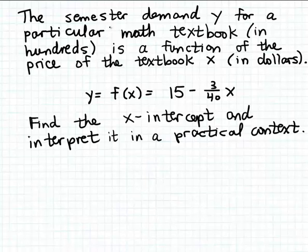In this example, we're told that the semester demand, which we're calling y, for a particular math textbook measured in hundreds, is a function of the price of the textbook x measured in dollars. A demand for an item is the amount of the item that can be sold. So here we're considering the number of math textbooks that we can sell in a semester at a particular price.